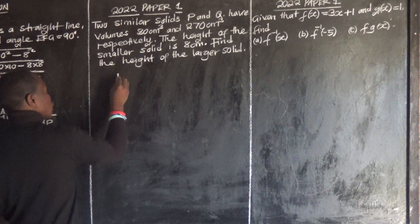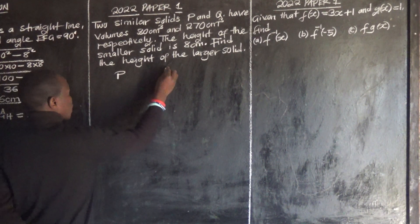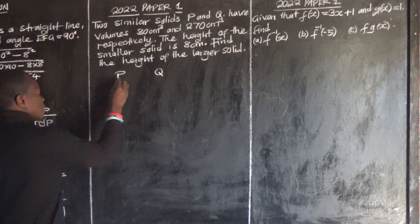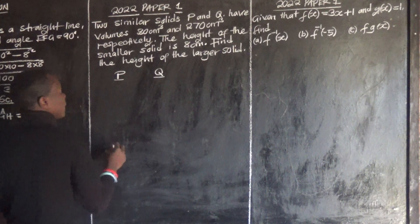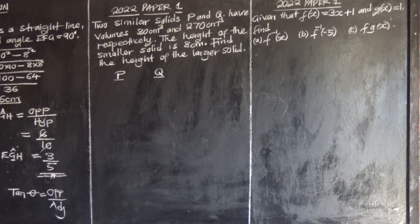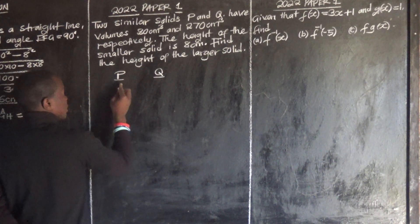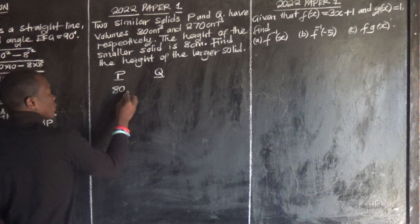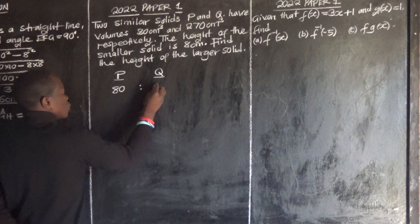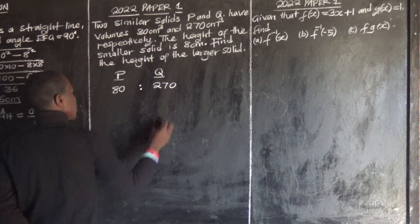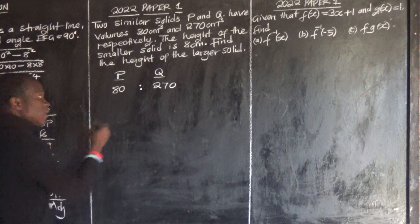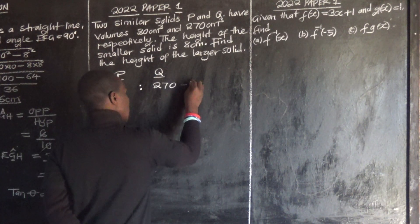We have solid P and solid Q. They are similar. Now the ratio of their volumes is given as 80 to 270 cubic centimeters. This is the ratio of volumes, take note. What we have been given is the ratio.